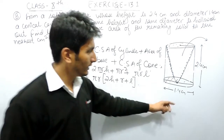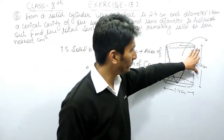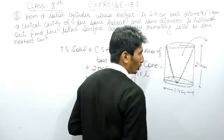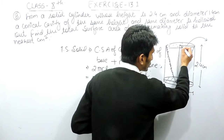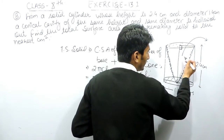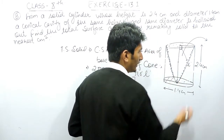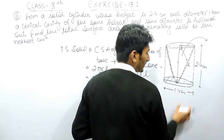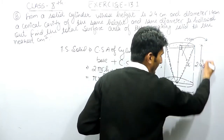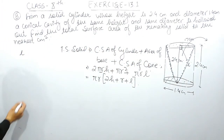The radius is half the diameter: diameter is 1.4 centimeters so radius r = 0.7 centimeters. Height h = 2.4 centimeters. Now I need to find L, the slant height of the cone. Using the Pythagorean theorem on the right triangle formed by the cone: the hypotenuse is L, the perpendicular is the height (2.4 cm), and the base is the radius (0.7 cm).